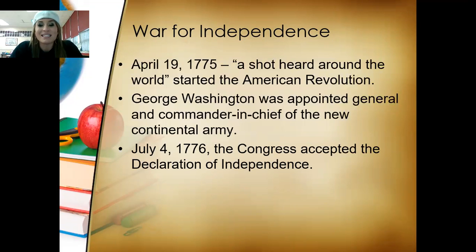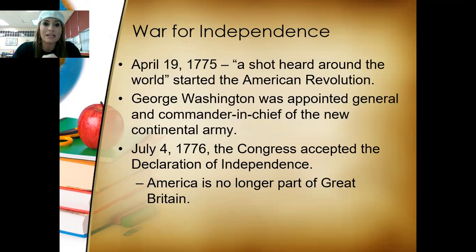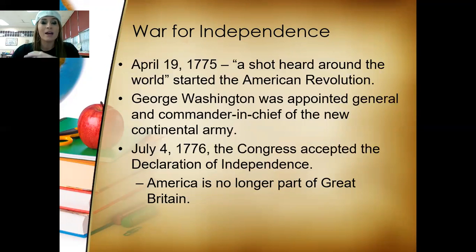July 4th, 1776, the Congress accepted the Declaration of Independence. America is no longer part of Great Britain. That's what they were fighting for — the Americas wanted independence from Great Britain. All those explorers that came over and made new settlements were still living by Great Britain's rules, and they did not want that anymore. That's why they started this American Revolution — to be separate from them.